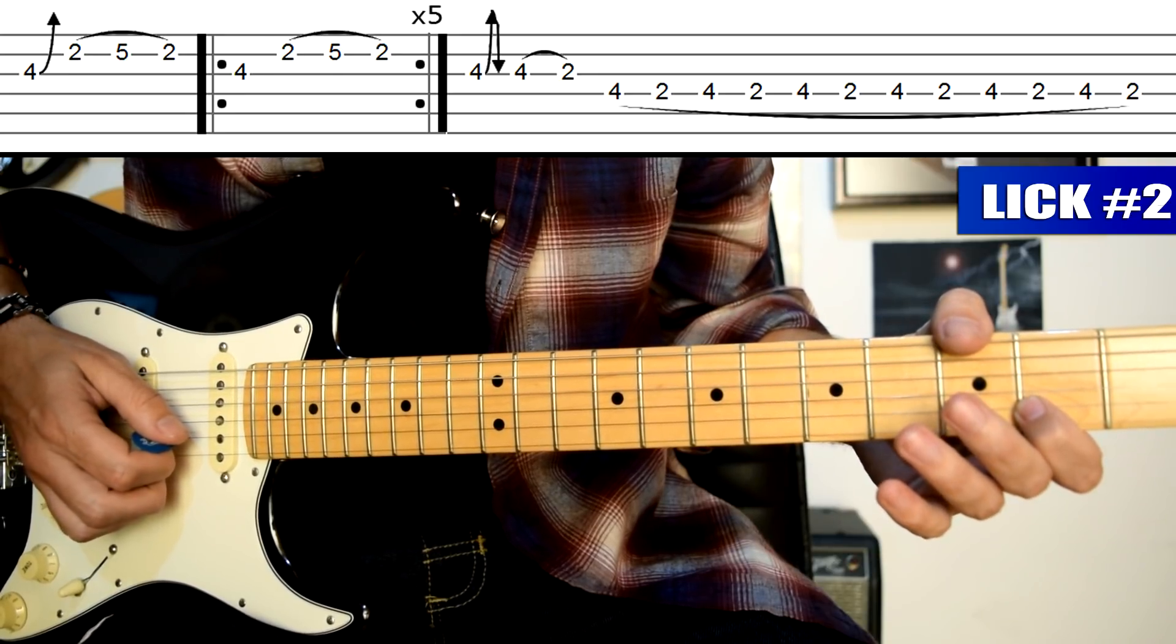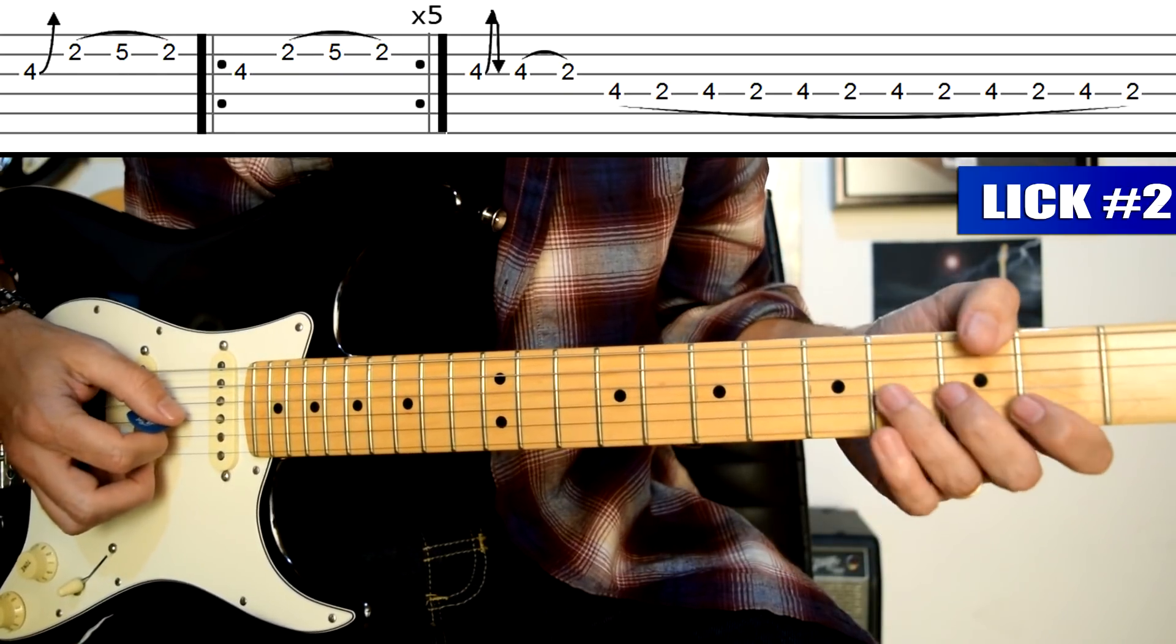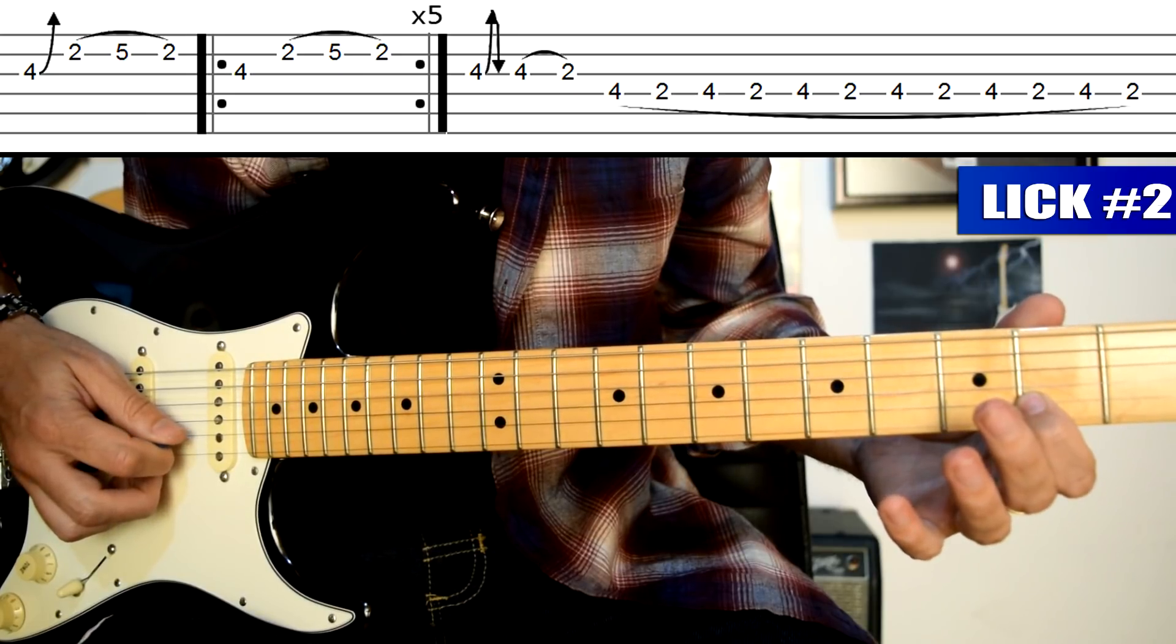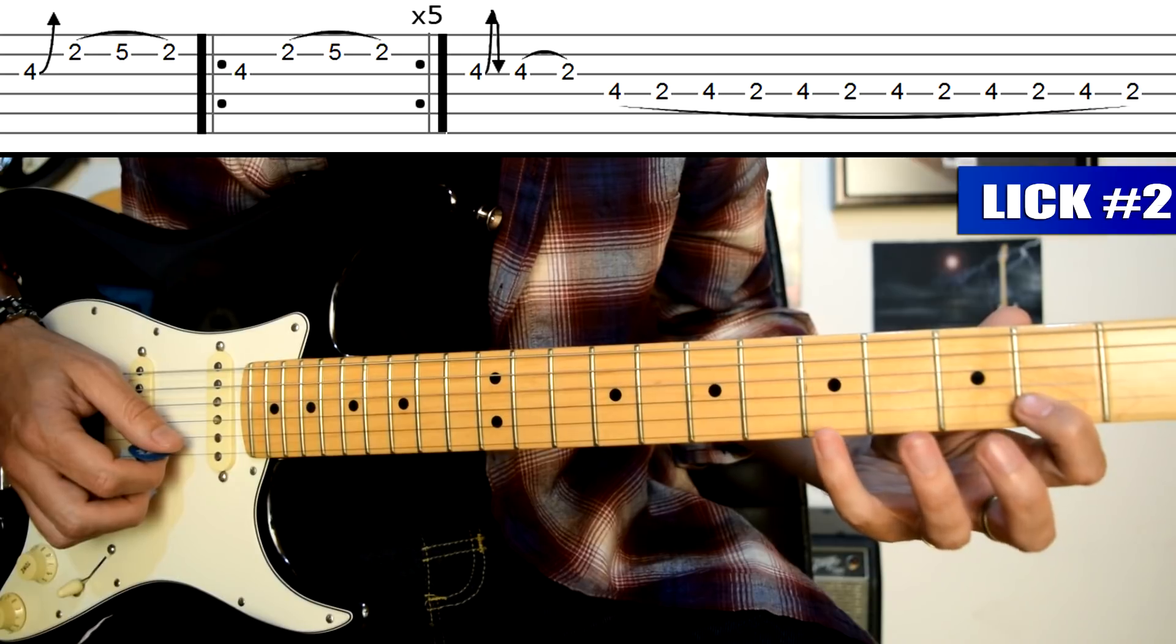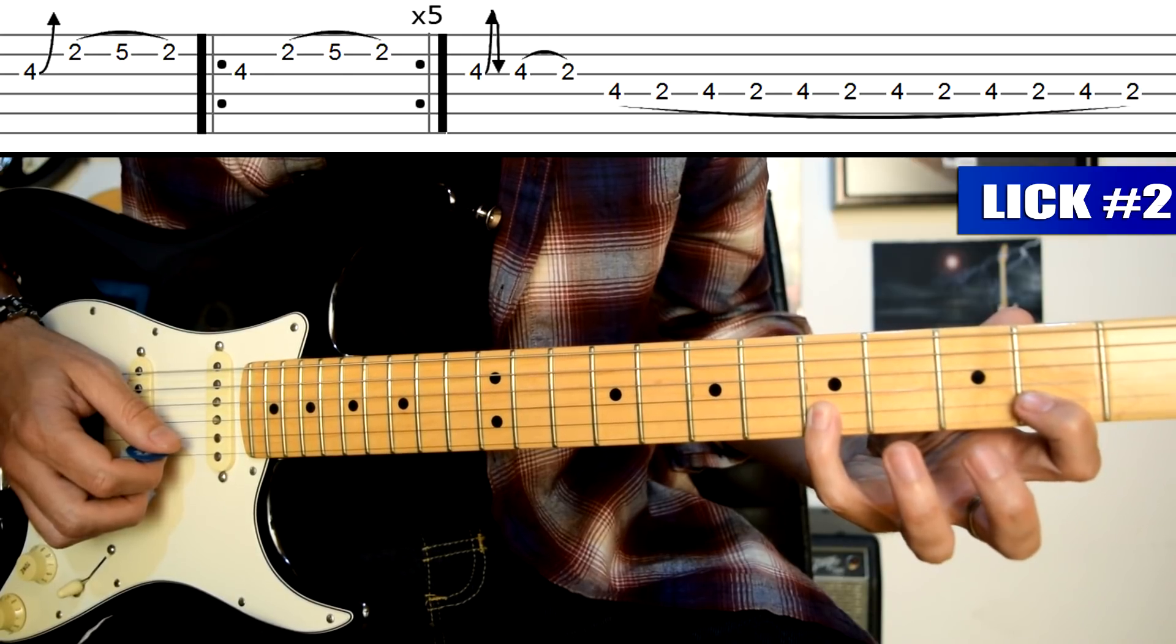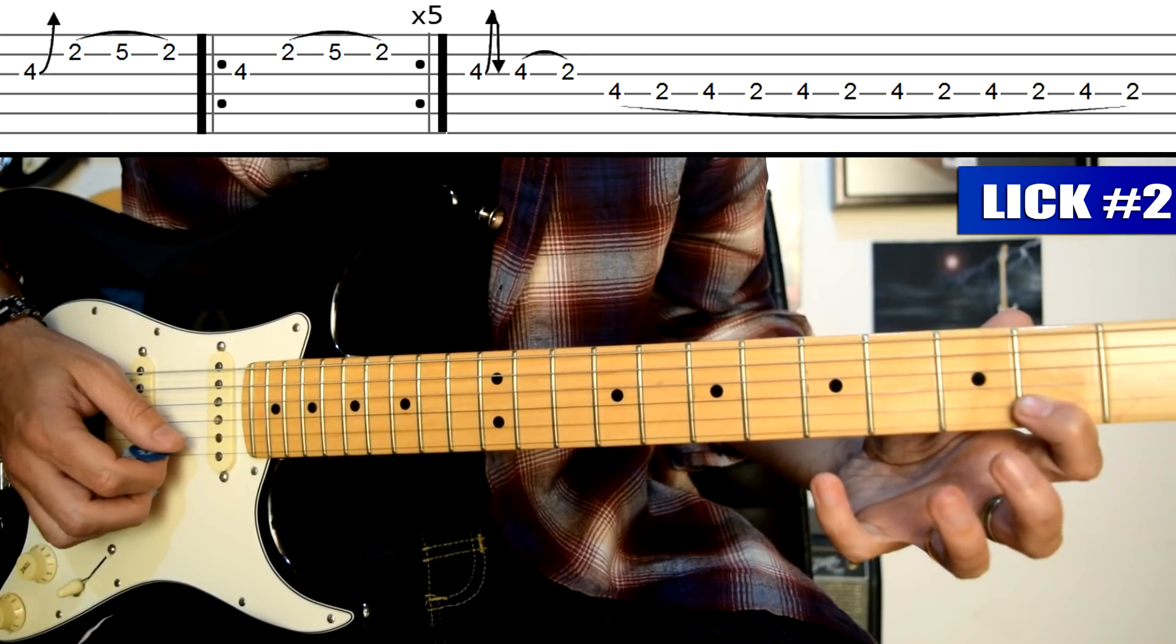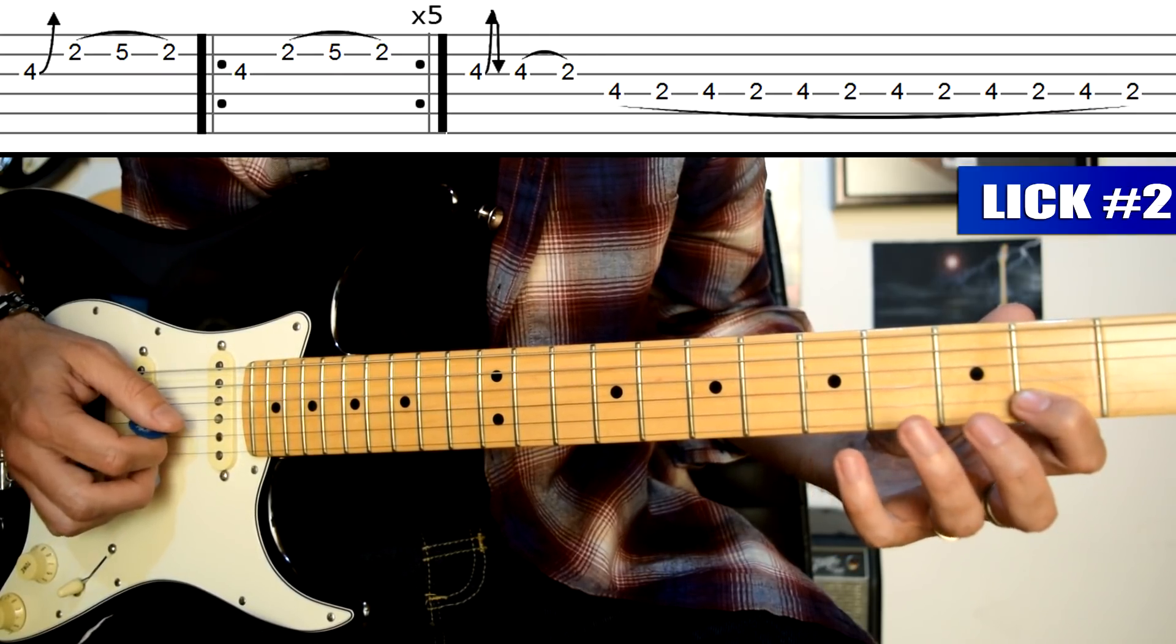Luego levantamos dedo 3 y 2. Esto yo lo hago muteando con la palma a la vez para que no suene la cuerda al aire. Y toco púa arriba en cuerda 2. Y ahora voy a martillar con el dedo 4 en el traste 5 de cuerda 2 y pellizco y levanto la cuerda 2 también con el dedo 4 hacia un ligado descendente.